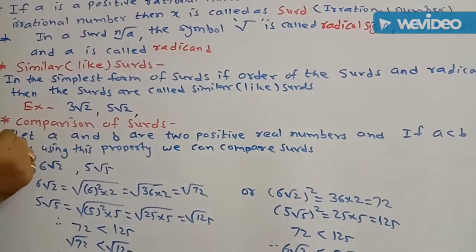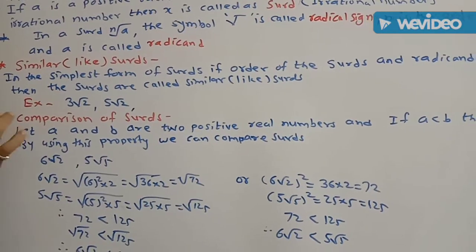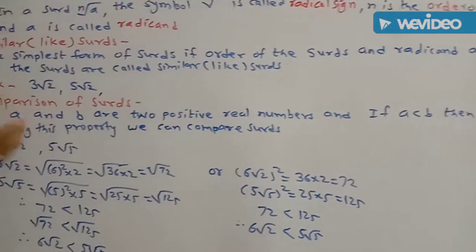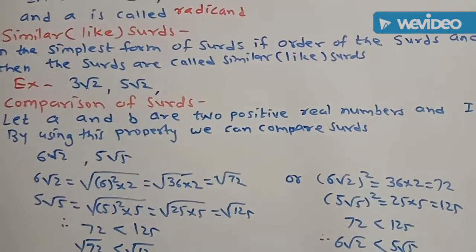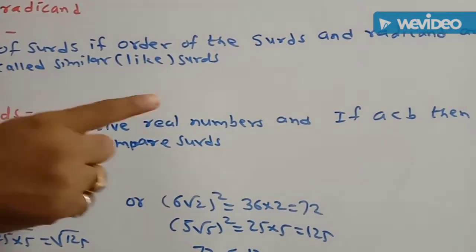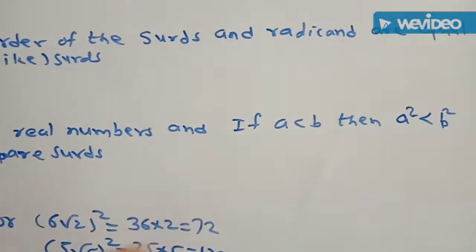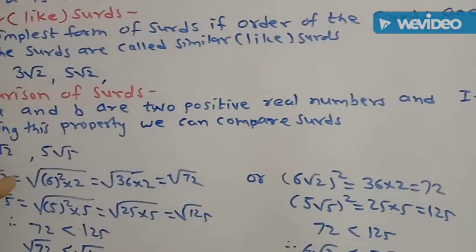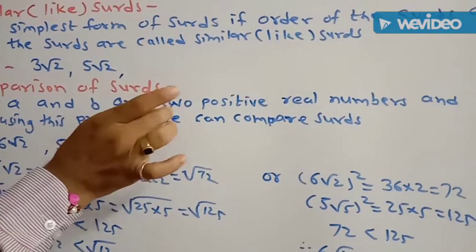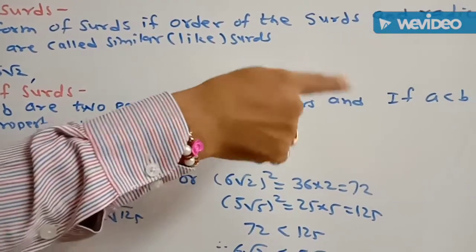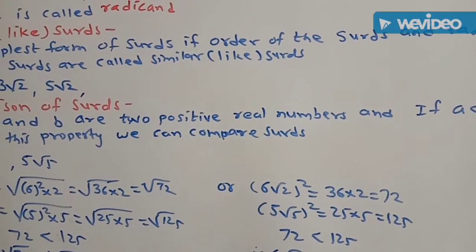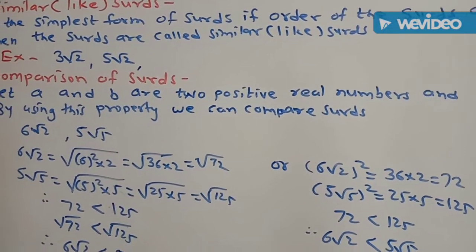Next topic: comparison of SIRDs. What is meant by comparison of SIRDs? Two SIRDs are given and we have to compare which is greater and which is smaller. If A and B are two positive real numbers and A is less than B, then A squared is also less than B squared. By using this property, we can compare the given SIRDs.